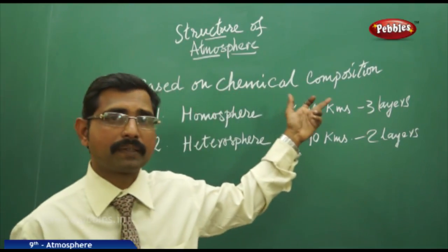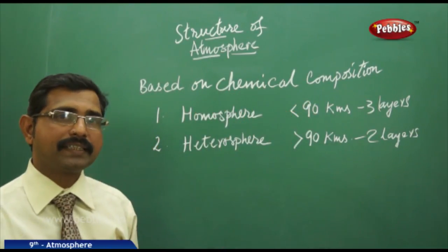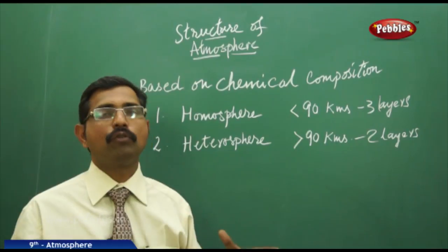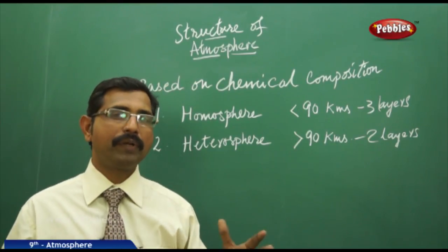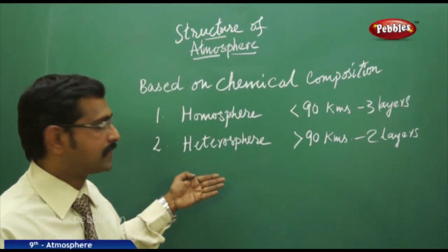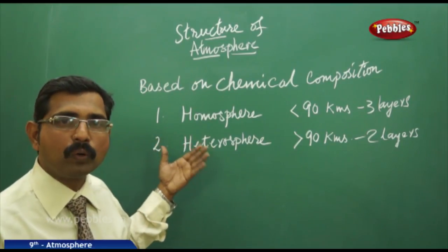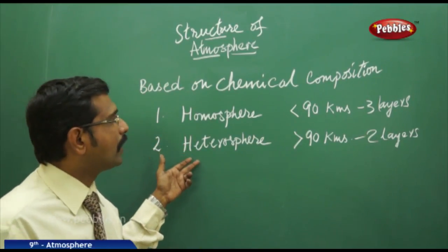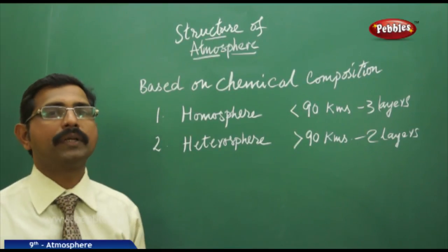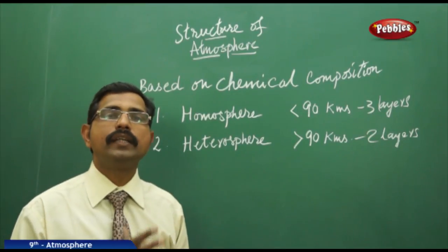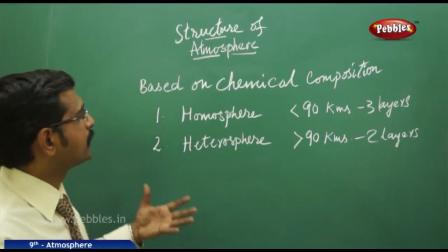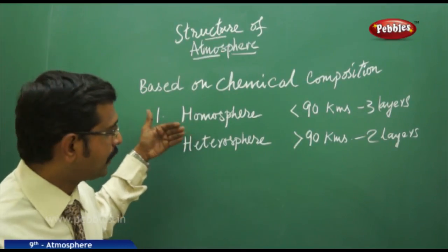Based on chemical composition, the atmosphere is divided into two layers: the homosphere, which has uniform chemical composition, and the heterosphere. As you know, 'homo' means equal or similar, so in the homosphere you observe uniformity. 'Hetero' means there is no uniformity in the chemical composition. So based on chemical composition we have the homosphere and the heterosphere.